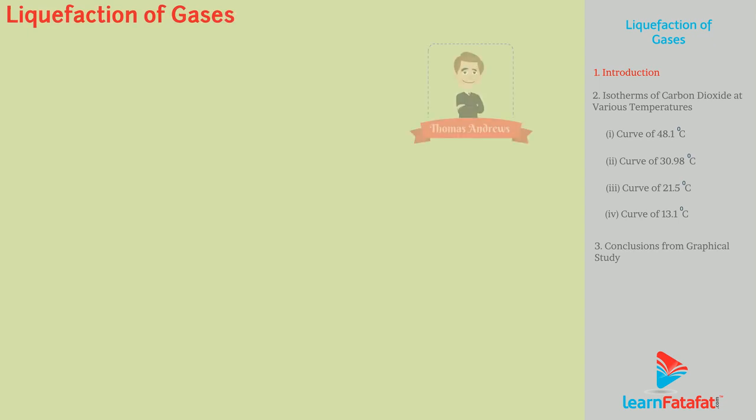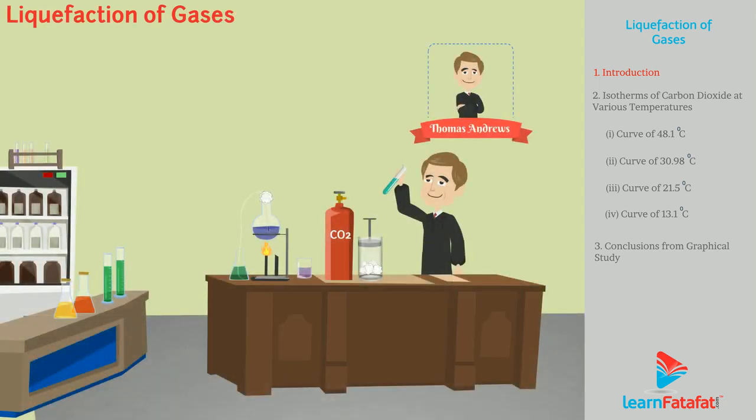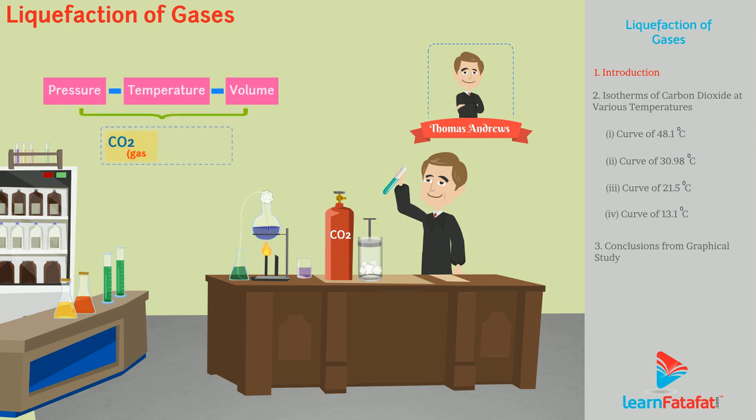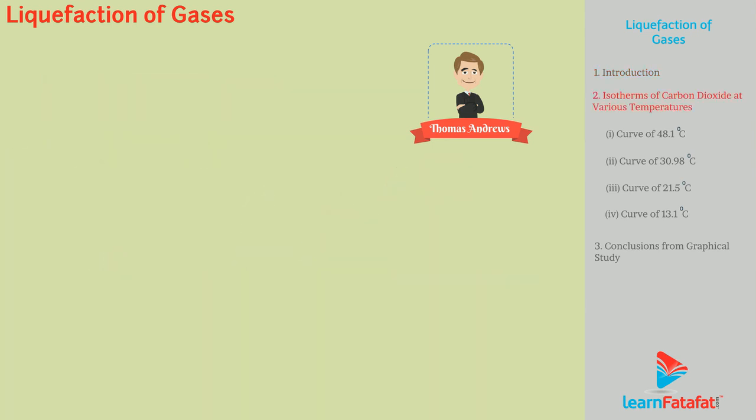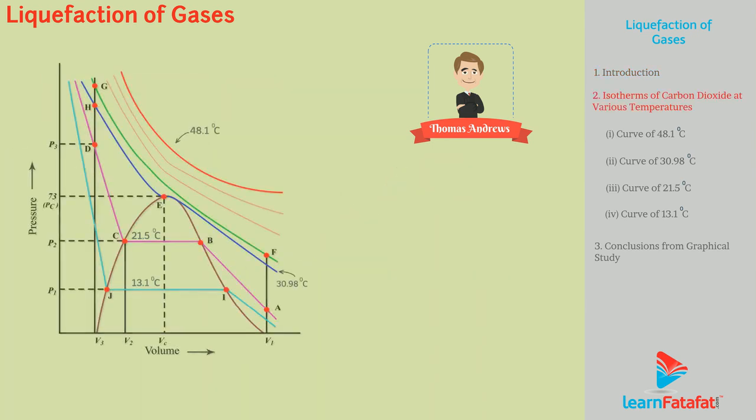Thomas Andrews performed experiments on carbon dioxide gas to understand pressure, temperature, volume relations in both gaseous and liquid state. He plotted different graphs of pressure versus volume for carbon dioxide gas at constant temperatures. Such curves are isotherms.